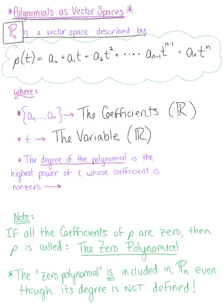T is a real number. And just like we see in algebra and pre-calculus, the degree of a polynomial is the highest power of the variable whose coefficient is non-zero. Here, our degree is n.